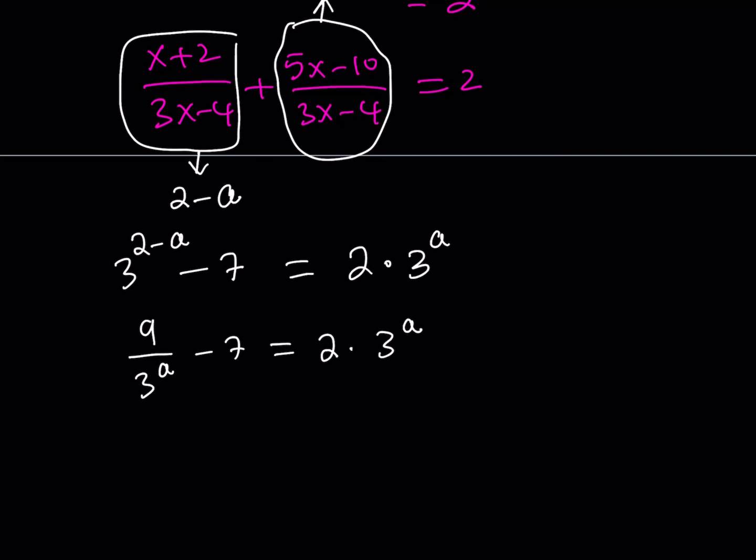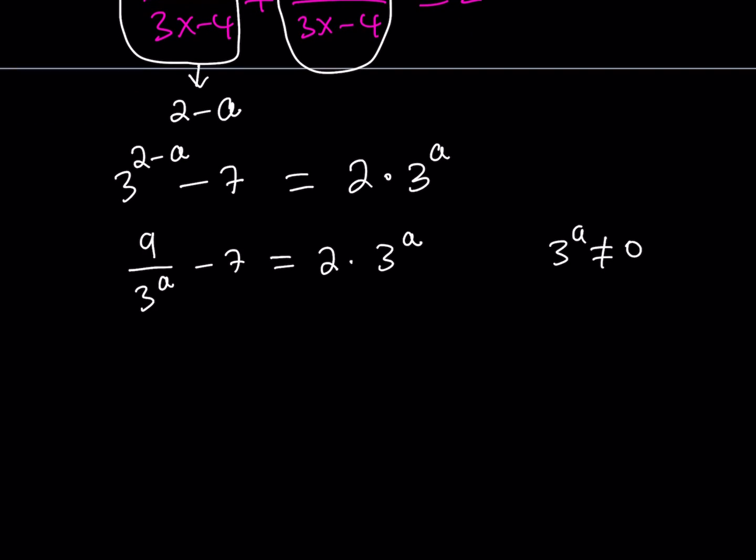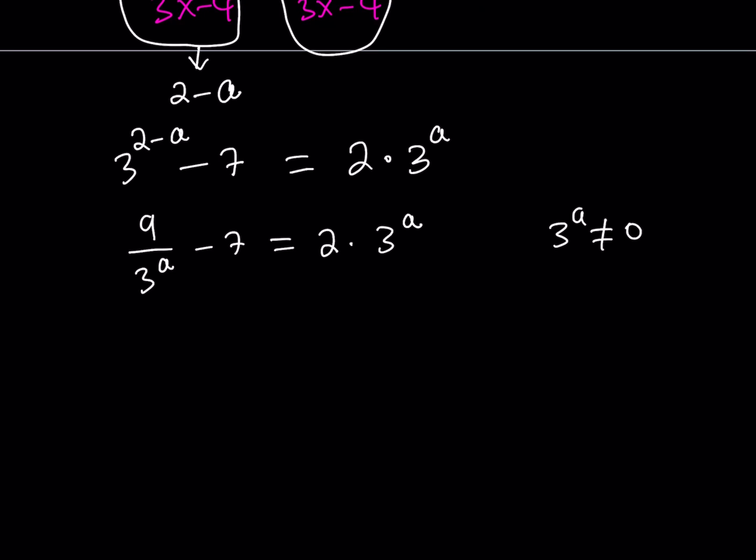Now, at this point, you know that 3 to the power of a can never equal 0, right? I mean, that's impossible, unless a is approaching infinity, which is going to be a limit problem. I mean, negative infinity, obviously. So, we can multiply everything by 3 to the power of a, which gives us 9 minus 7 times 3 to the power of a, which is equal to 2 times 3 to the power of a, multiplied by itself, is going to be 3 to the power of 2a.